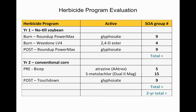Coming back to fill in those numbers: for soybeans we have Groups 9 and 4; for corn, BICEP gives Groups 5 and 15, and glyphosate is Group 9 again. The key point is that anytime you're using the same site of action within a year or over years, you can only count it once. We're using glyphosate twice in the beans and once in the corn, so we can only count 2 sites of action in the beans and 3 in the corn, giving a 2-year total of only 4 — not a very diverse program.